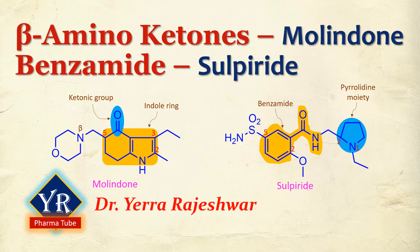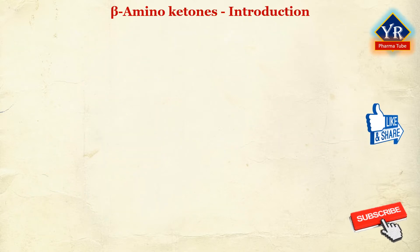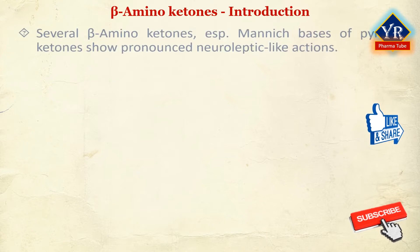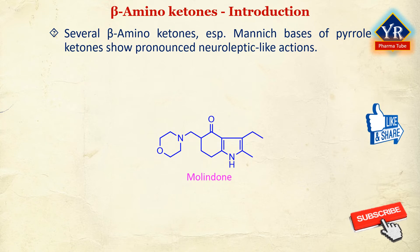In this lesson, we shall discuss the beta-amino ketones and benzamides types of antipsychotic agents, and the drugs molindone and sulpiride of their respective categories. We will start the lesson with an introduction to beta-amino ketones. It has been observed that several beta-amino ketones, in particular Mannich bases of pyrrole ketones, show pronounced neuroleptic-like actions.